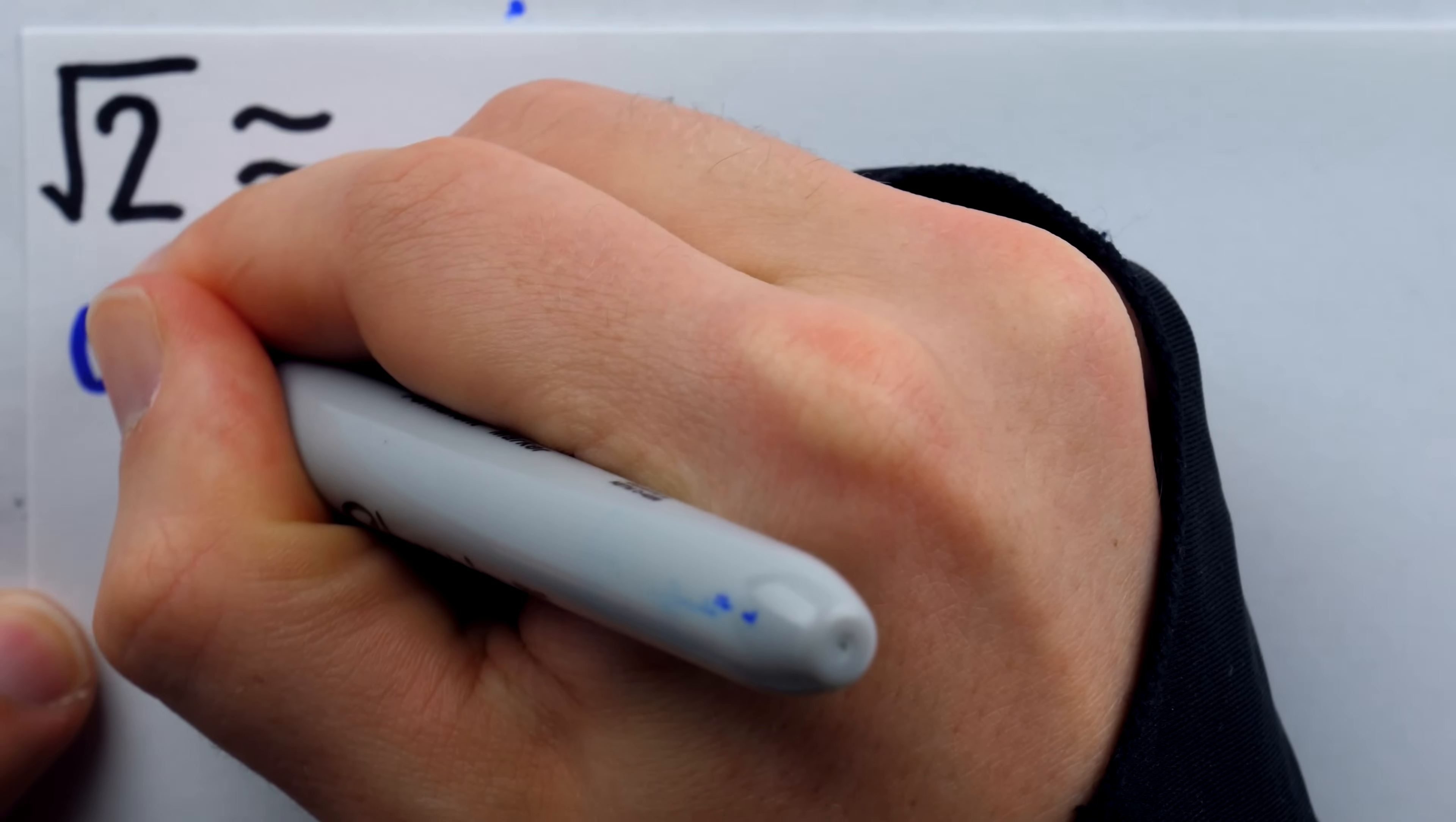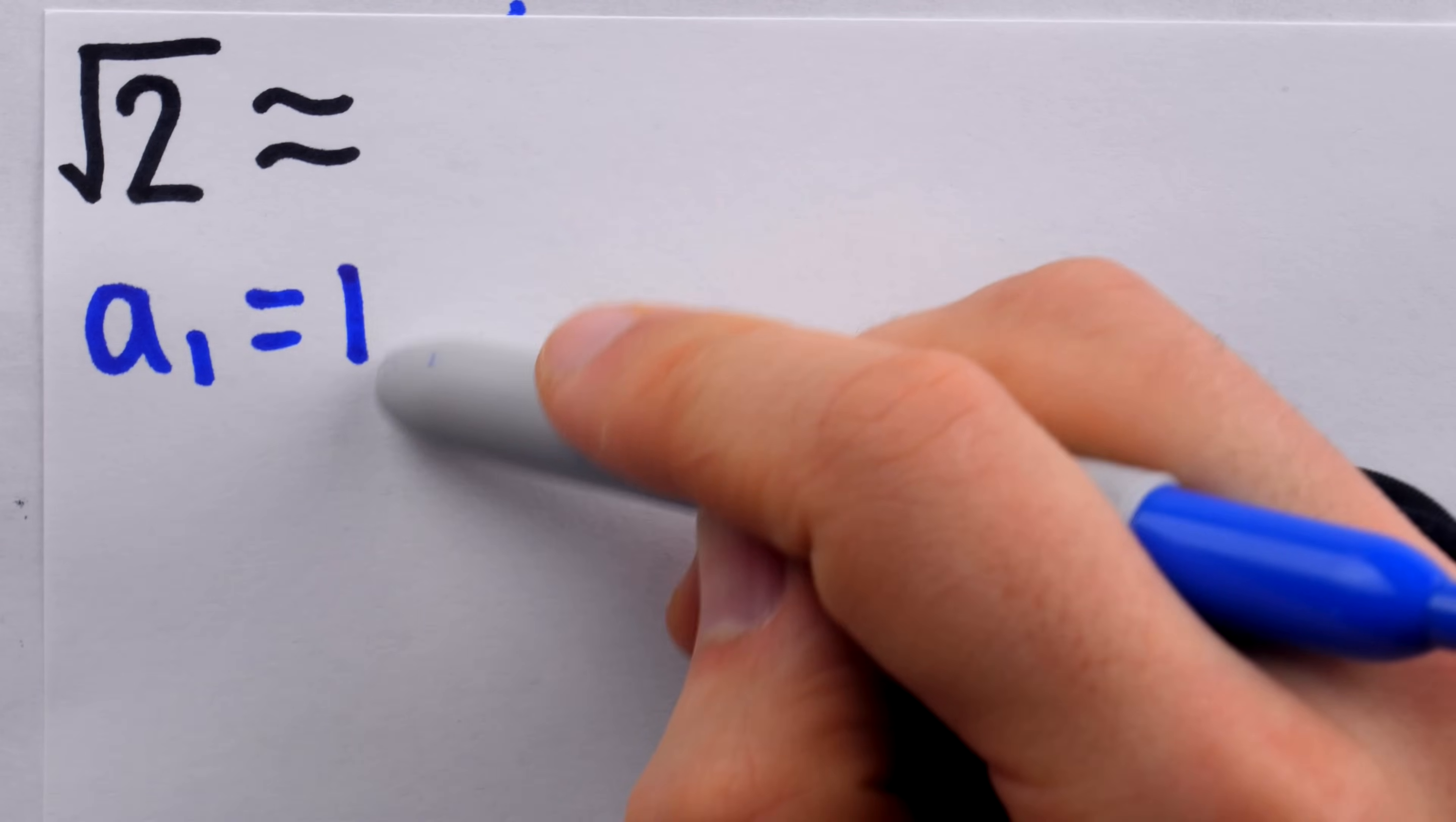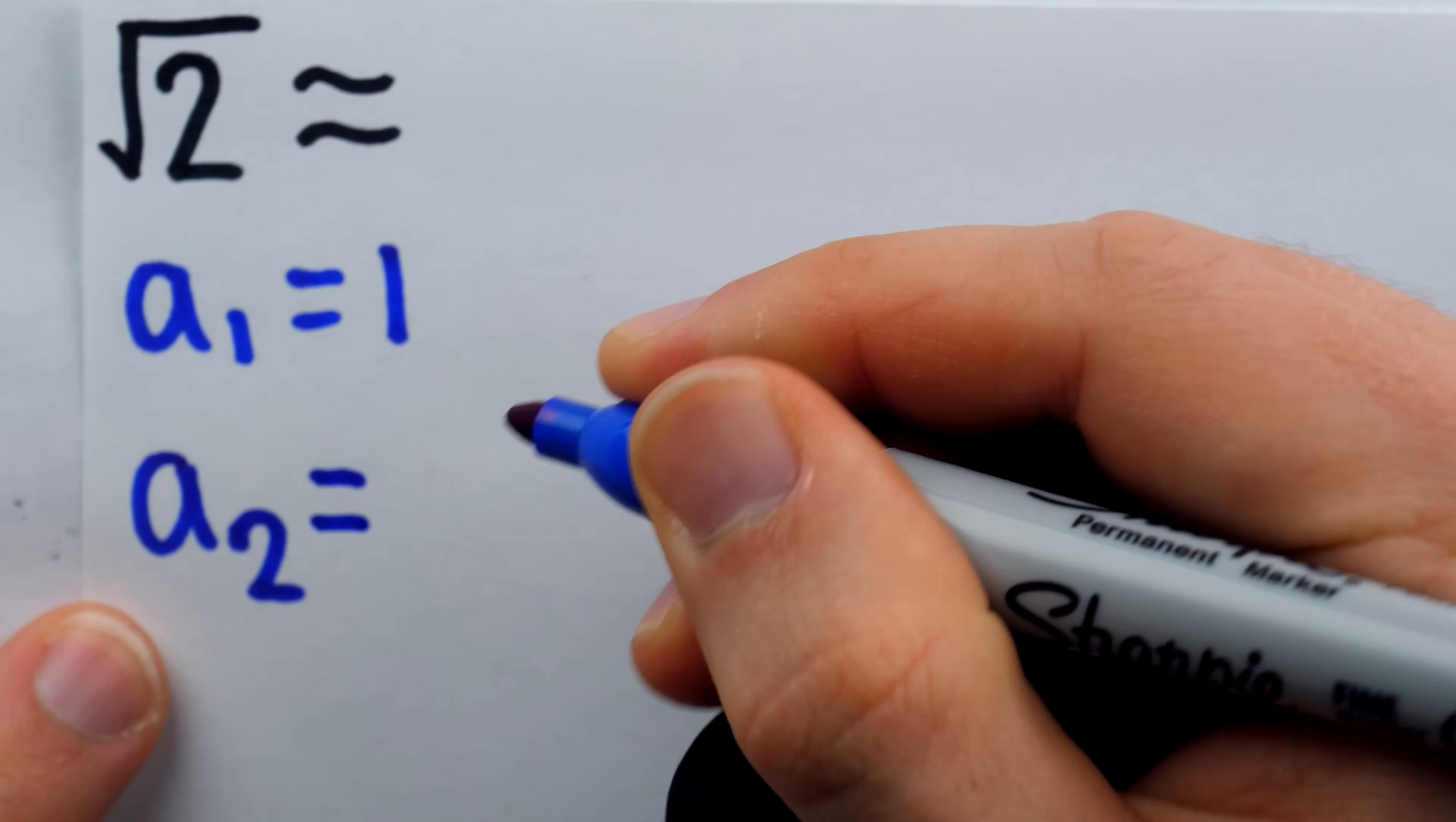The idea of Heron's method is to construct a sequence of approximations for the square root that get better and better. We need to begin with some guess. Let's just guess the square root of 2 is somewhere close to 1. It doesn't matter if our guess is far off. As long as it's positive, the method will work out.